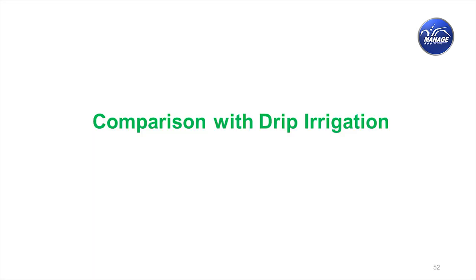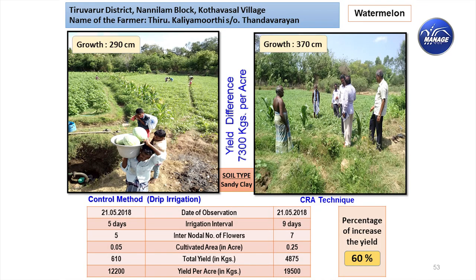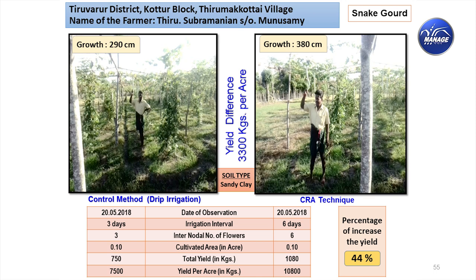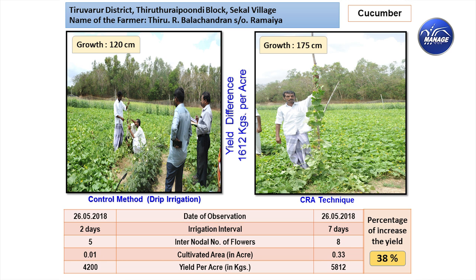We also studied blending CRA with drip irrigation. In one watermelon plot with drip irrigation alone, irrigation interval was once every 5 days; in the CRA-only plot, it was once every 9 days — yet CRA had more internodal flowers and ultimately 60% additional yield. In pumpkin, additional yield was 48%. The irrigation interval was longer with CRA yet yields were higher. Snake gourd had 44% additional yield, ash gourd 38%, and cucumber 38%.